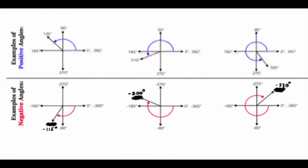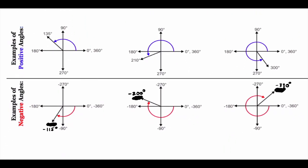Here are some examples. The blue angles are positive angles — they start at zero. The first one goes to 135, the second goes to 210, and the third goes to 300. The negative angles — it's supposed to be negative 115, negative 200, and negative 330. Those are going in the opposite direction.